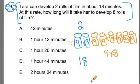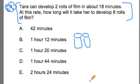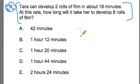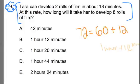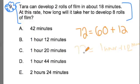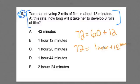So now that I know it's going to take 72 minutes, what's the answer? You've got to be able to convert 72 minutes into hours and minutes. You could say 72 minutes is like 60 minutes plus 12 minutes, and 60 minutes is the same as one hour. So we get one hour and 12 minutes. That's how we break up 72 minutes, and we get our answer conveniently right here in choice B.